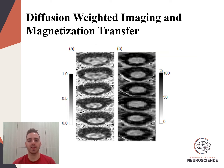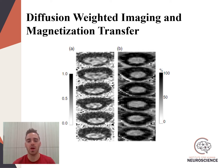These individuals also underwent diffusion-weighted imaging, an example of which is shown on the left side of the screen in panel A. From this, we could extract fractional anisotropy, which is generally a measure of the integrity of white matter tracts. We were also able to look at magnetization transfer imaging, from which we were able to extract the magnetization transfer ratio, an outcome measure previously associated with alterations in both gray and white matter.